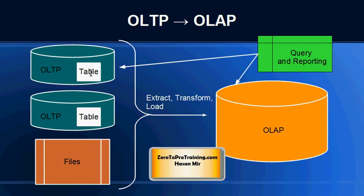So in order to reduce the burden of querying on the OLTP systems, data is periodically moved from all the OLTP systems to a data warehouse called an Online Analytical Processing System. The process of moving the data from the OLTP system to OLAP is called Extract, Transform and Load, because it's not simply copying and pasting. The data has to be extracted, transformed, sometimes aggregated, and then loaded into the data warehouse.